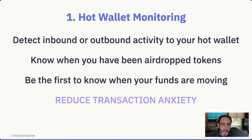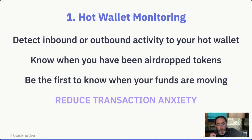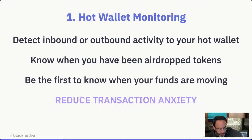For hot wallet monitoring, what we're going to do is basically set up a mempool data feed to detect inbound or outbound activity to your hot wallet. Transactions on public blockchain networks, particularly during periods of congestion, can be very anxiety-inducing. By adding visibility to the process, we can significantly reduce transaction anxiety. This also provides basic understanding and visibility into how mempool monitoring actually works.